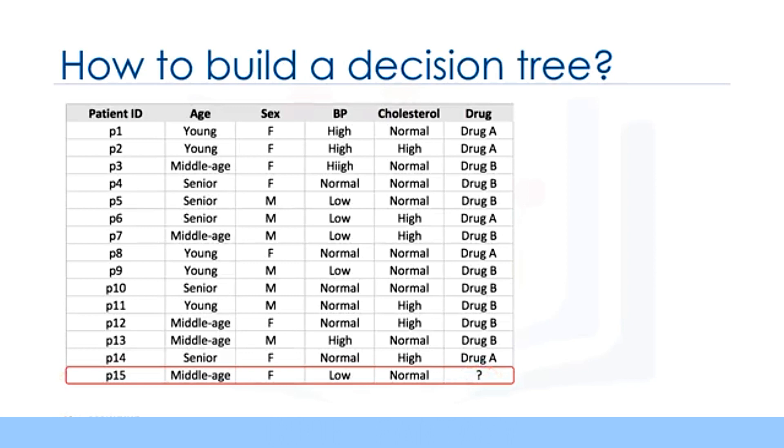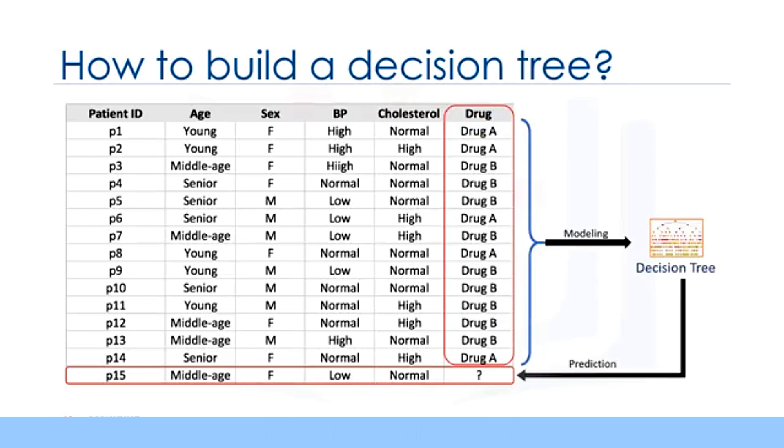The feature sets of this dataset are age, gender, blood pressure, and cholesterol of our group of patients. And the target is the drug that each patient responded to. It is a sample of binary classifiers and you can use the training part of the dataset to build a decision tree and then use it to predict the class of an unknown patient. In essence, to come up with a decision on which drug to prescribe to a new patient.